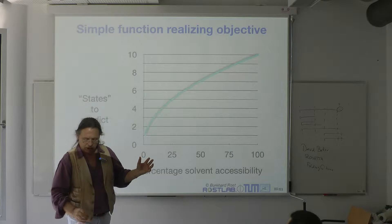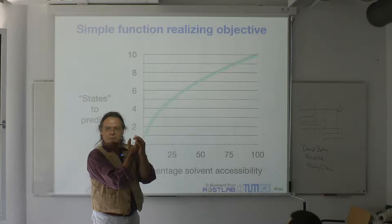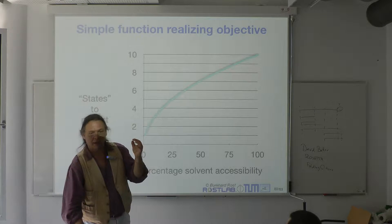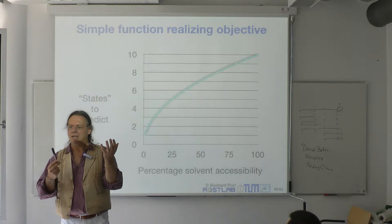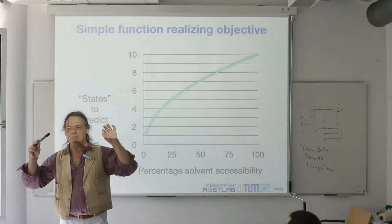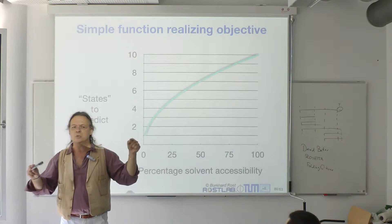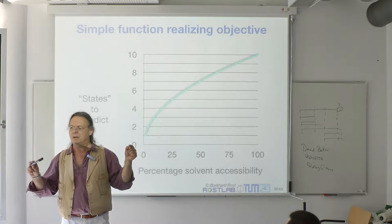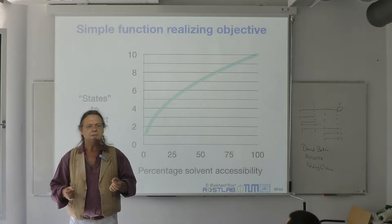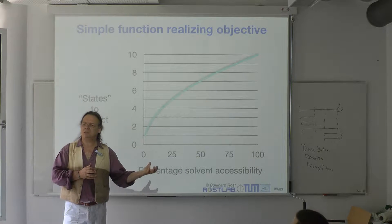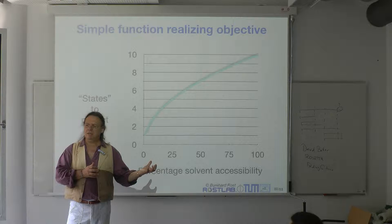From the 3D object, you can simply measure the similarity in solvent accessibility. What you want to predict is something that reflects the difference between matching two things that are similar in structure versus matching two things that are completely different. When I predict solvent accessibility, it should tell me something about the similarity of structure.